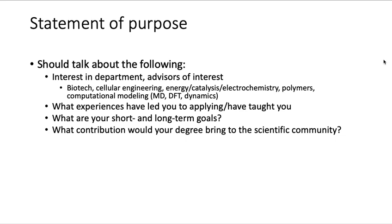The statement of purpose is really important. I started drafting mine during my junior summer and it took about 10 to 15 iterations to get it right. In the first two paragraphs, talk about your interest in the school you're applying to and which advisors you want to work with. Research areas in chemical engineering typically include biotech, cellular engineering, molecular biology, energy catalysis, electrochemistry, polymers, and computational modeling — things like molecular dynamics, DFT, and larger-scale simulations. Also talk about what experiences have led you to apply and what those experiences taught you.